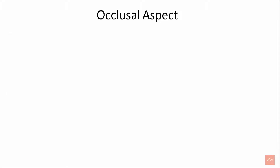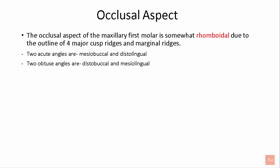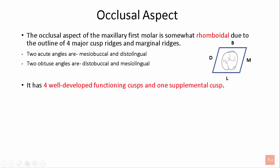Now let's examine in detail the occlusal aspect of the maxillary first molar. It is somewhat rhomboidal in shape due to the outline of the four major cusp ridges and marginal ridges. The distal, mesial, buccal, and lingual sides are visible. The two acute angles are mesiobuccal and distolingual, while the two obtuse angles are distobuccal and mesolingual.